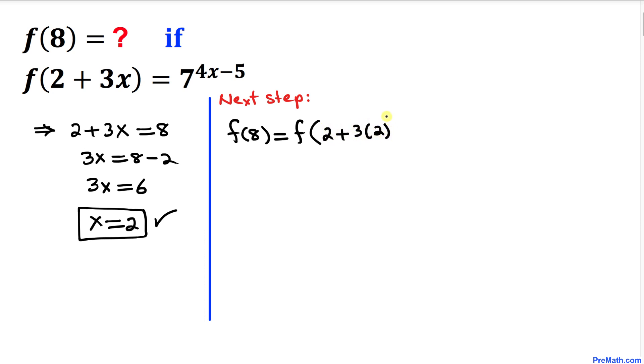As you can see, where this 2 is our x value. Here's our function definition. According to this, we can further write it as 7 to the power of 4 times 2 minus 5.